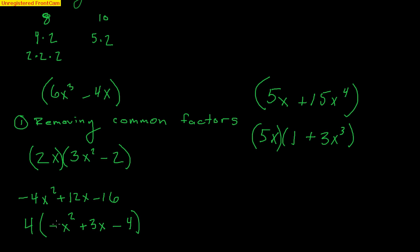Another thing we like to do here is we don't really like the first term being negative. So in the original problem, we could have taken out a negative 4 instead. That would make the x² positive, the 3x negative, and the negative 4 positive. Negative 4 times x² makes negative 4x², negative 4 times negative 3x makes positive 12x, and negative 4 times positive 4 makes negative 16. So sometimes it's important to also look at taking negatives out as well.